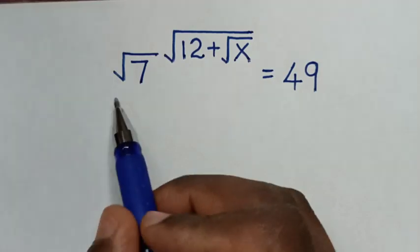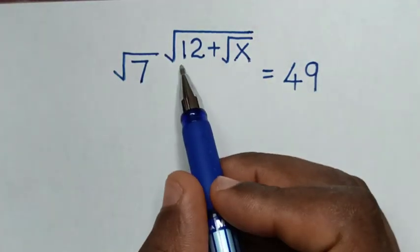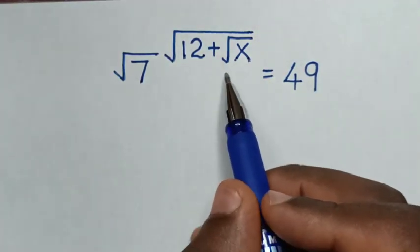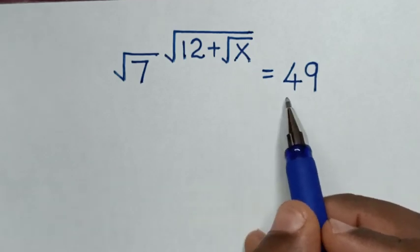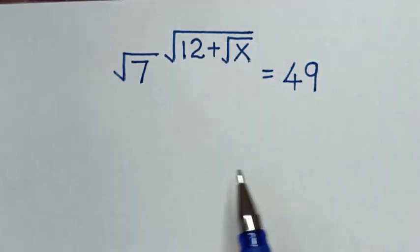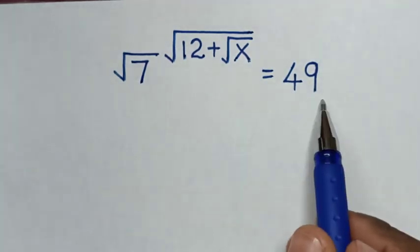Hello. How to solve: square root of 7, raised to the power of square root of 12 plus square root of x, is equal to 49 — to find the value of x from this equation.